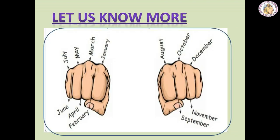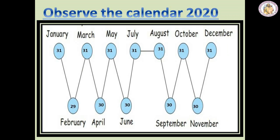Children, you can remember the months of the year by using your knuckles. Fix the names of the months in each knuckle as shown. The months represented by each knuckle have 31 days and the spaces in between have 30 days, but February has either 28 or 29 days. Observe the number of days in each knuckle as shown.